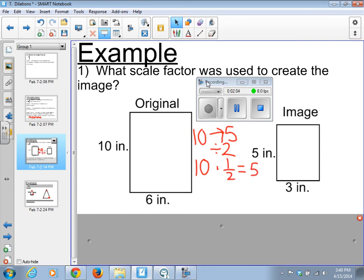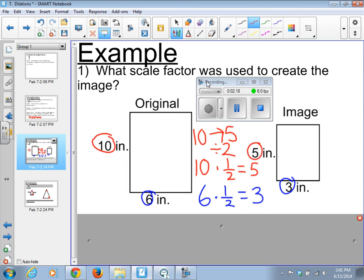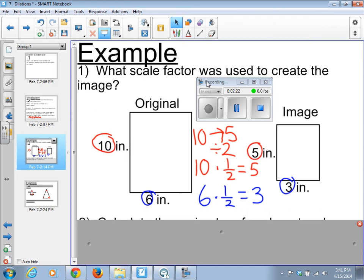The same for the width. If we start off with 6, multiplied it by one half, it gave us 3. So we see we have 6 here and the 3 here and the 10 here and the 5 there. Therefore, we can say that our scale factor is one half. Very important, guys. We are always going from the original to the image.